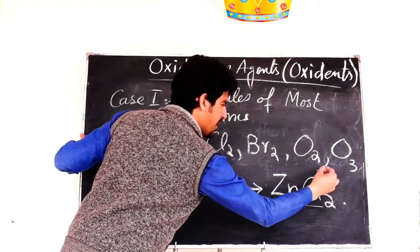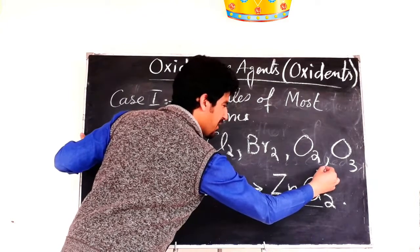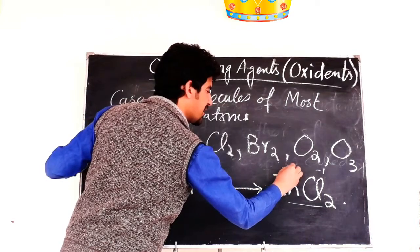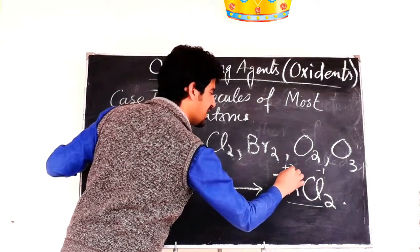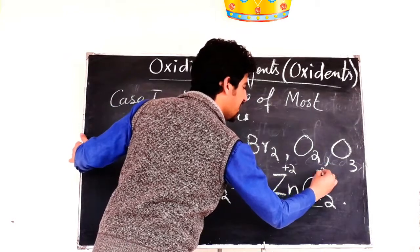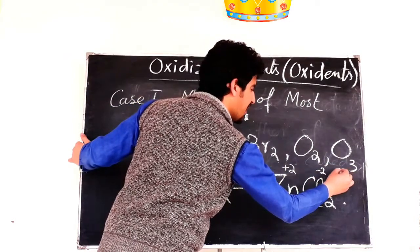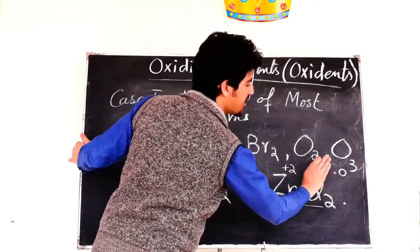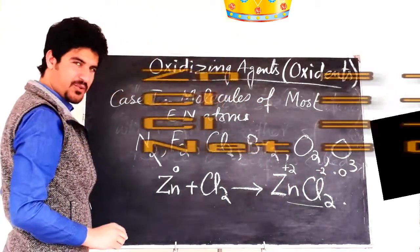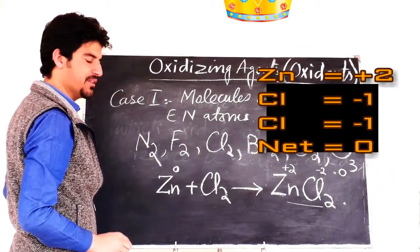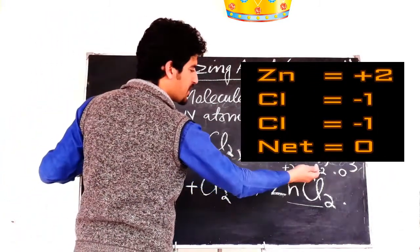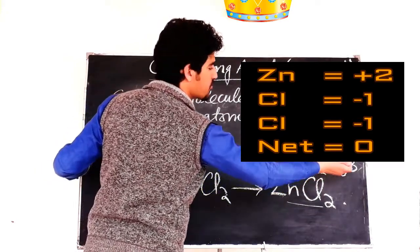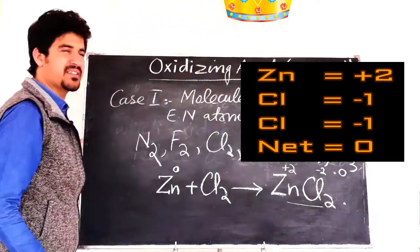Chlorine will become minus 1, so minus one, minus one gives minus two. This minus two needs to be neutralized, so zinc needs to be plus two, because in a compound the overall oxidation state must be zero. As discussed in the last lecture, chlorine is minus two so zinc must be plus two.